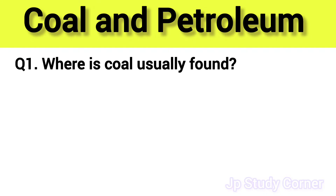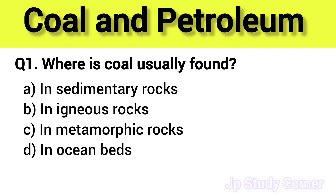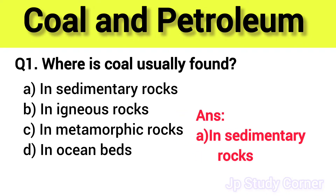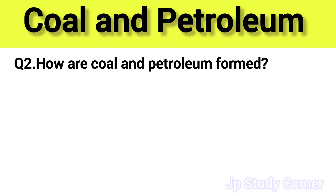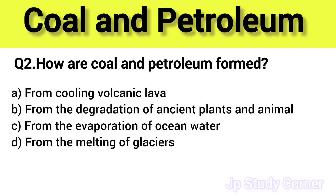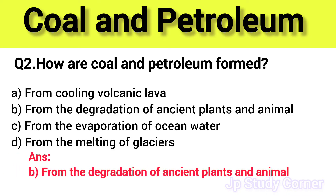Question number one: where is coal usually formed? The right answer is option A — in sedimentary rocks. Question number two: how are coal and petroleum formed? The right answer is option B — from the degradation of ancient plants and animals.